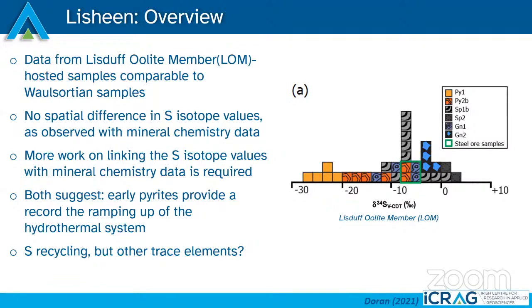Sulfur recycling does occur, happening in quite a lot of deposits around the world. Pyrite is often replaced by sphalerite with direct replacement, taking in that sulfur isotope signature, but what happens to all the other trace elements? A colleague Ling Lee at ICRAG has done quite a lot of mineral chemistry work on sphalerites from the scheme and has seen things like increases in thallium — so maybe these elements like thallium are also being incorporated into later sulfides, meaning early pyrites may be way more important than previously thought in terms of sourcing elements and sulfur isotope signatures for these later phases.